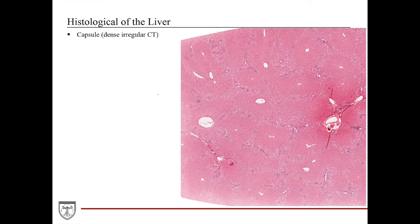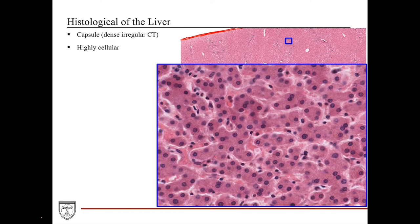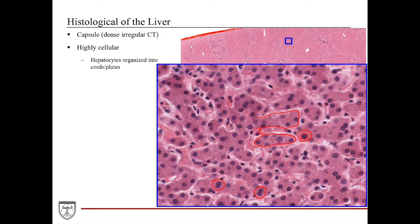Histologically, the liver has a dense irregular connective tissue capsule and a highly cellular parenchyma. At higher magnification we can see the parenchymal cells called hepatocytes — large polygonal or spherical cells with large cytoplasm, large euchromatic nuclei, and punctate nucleoli. Some hepatocytes can be binucleate, which is not uncommon. These hepatocytes form cellular cords or plates separated by thin vascular spaces called sinusoids — a characteristic feature of liver histology.